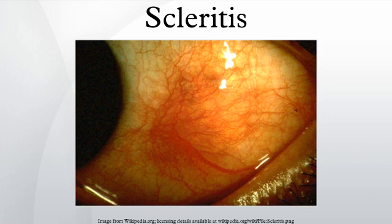Secondary keratitis or uveitis may occur with scleritis. The most severe complications are associated with necrotizing scleritis. Scleritis is not a common disease, although the exact prevalence and incidence are unknown. It is somewhat more common in women, and is most common in the fourth to sixth decades of life.